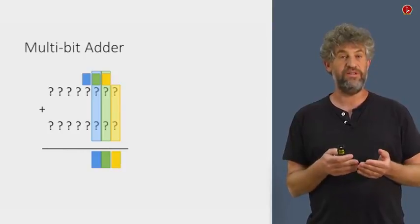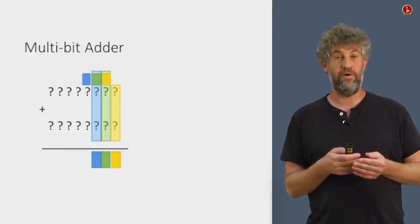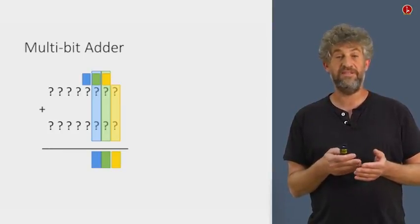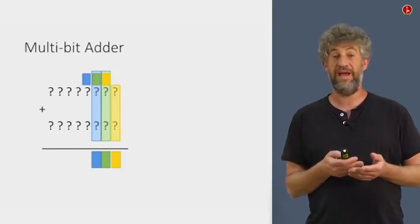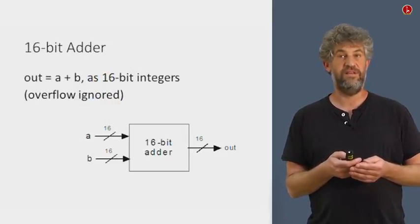So to implement the whole thing, we just need to basically connect 16 of these full adders, or maybe 15 full adders and one half adder for the rightmost bit. Connect them together in the right way, and you get exactly an adder. And this is what you're supposed to do. This is our 16-bit adder.